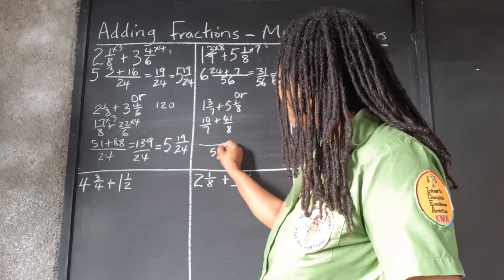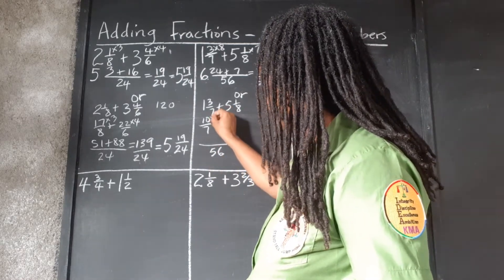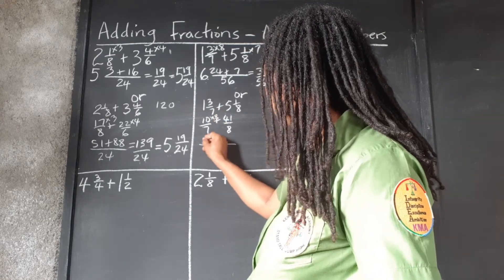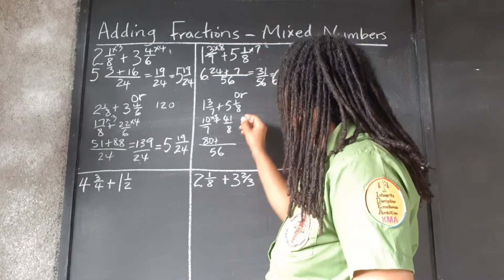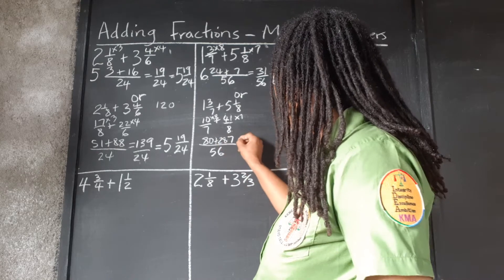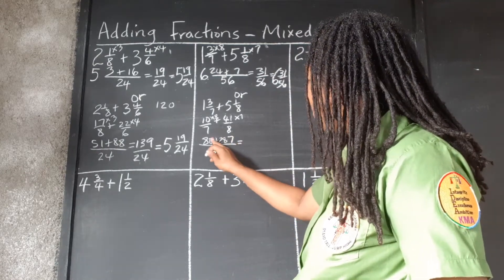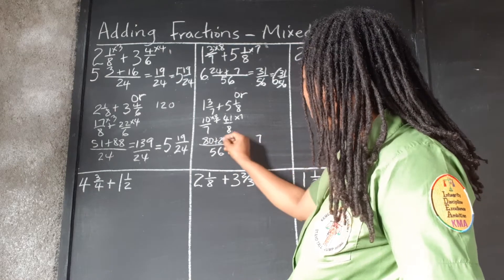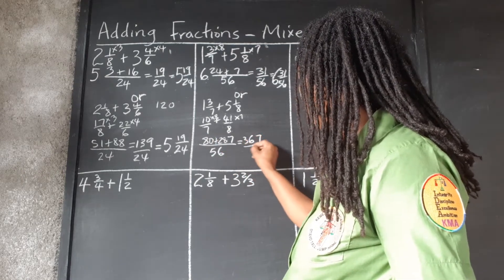Still find our LCM. 7 into 56, 8. 10 times 8 is 80. 8 into 56, 7. 7 times 41. That gives us 287. And we're left with 7 plus 0 is 7. 8 plus 8 is 16. And 2 and 1, 3 over 56.